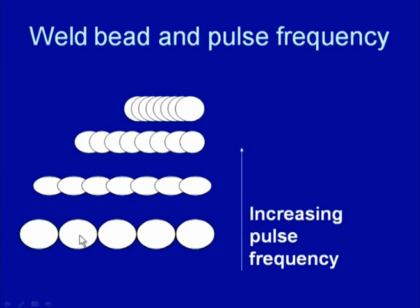If the pulse frequency is increased, the heat generated develops overlapping weld pools. As the pulse frequency increases further, the percentage of overlap keeps increasing and a continuous weld pool with some degree of overlap is formed. With increasing pulse frequency, the peak current is generated at very short intervals, making the weld pool solidify quickly at very short intervals of time.